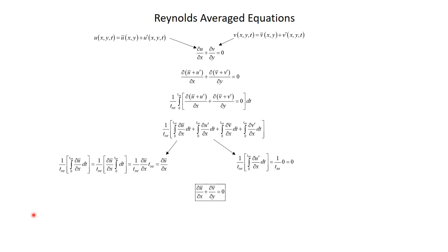Let's practice with the continuity equation to demonstrate how this process works. The continuity equation describes the time-varying u and time-varying v in all its glory inside a turbulent boundary layer. I want an equation that describes the time-averaged ū and v̄, so the first step is to substitute the definition u equals ū plus u-prime and v equals v̄ plus v-prime into the continuity equation.